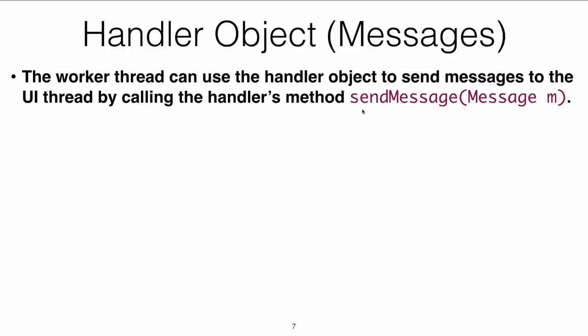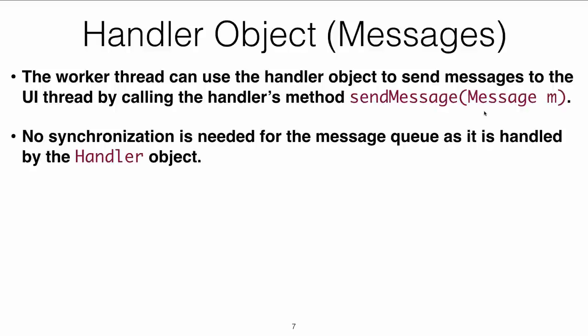So how is this done? There is a method called sendMessage — it's a handler method, you just call sendMessage and create the message. What is the message? The message is a bundle. Bundles are like extras when we talked about intents — key-value pairs — so you send a message as a key-value pair. You can put a lot of information into a bundle, like a hash map.